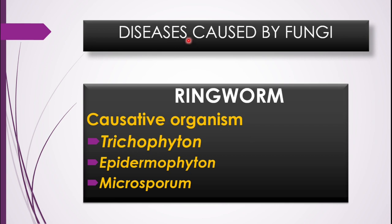Let us now study the last category — diseases caused by fungi. The disease you need to learn is ringworm. Don't be confused — ringworm is not a worm but a disease caused by fungi. The causative organisms fall under three genera: Trichophyton, Epidermophyton, or Microsporum. Any of these three fungi can cause the disease named ringworm.